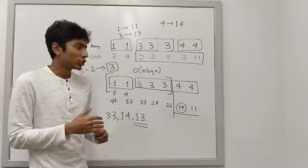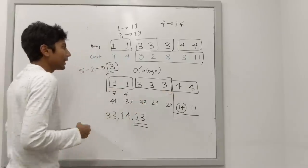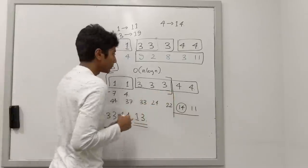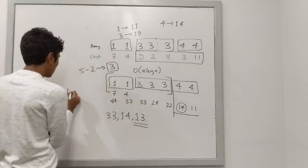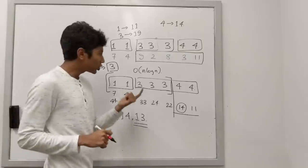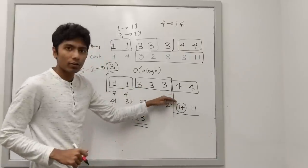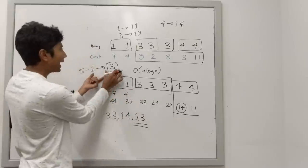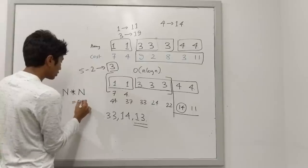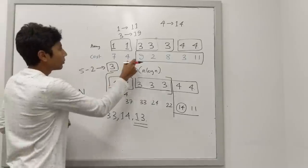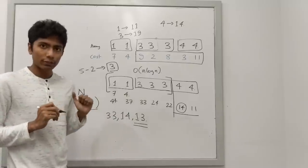If I do this in the brute force way, for every candidate maximum — and the number of distinct elements is at most n — for each one I'd need to traverse the array and find the minimum k elements to remove. That takes O(n) time, giving an overall complexity of O(n²) plus O(n log n) for sorting, so effectively O(n²). We need something better.